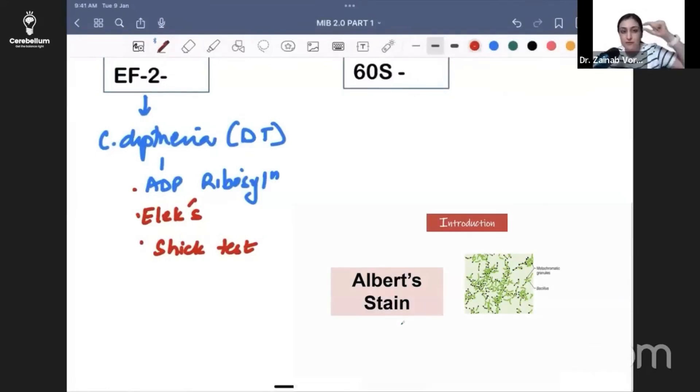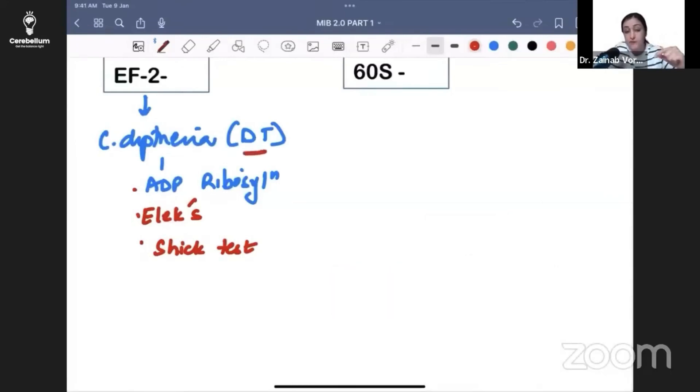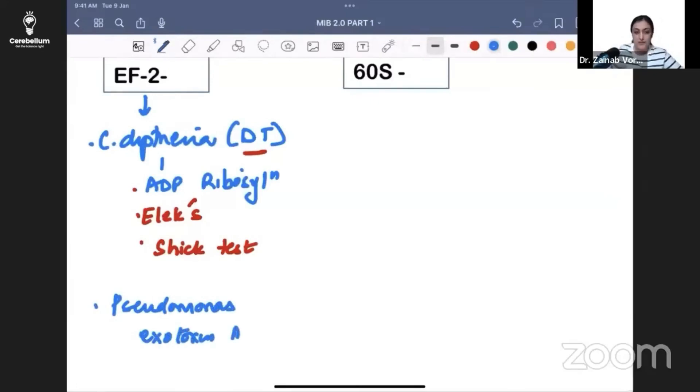We have Albert stain, where the volutin granules containing diphtheria toxin are stained differently - hence the name metachromatic granules. The other bacteria with the same mechanism is Pseudomonas exotoxin A. That's the other toxin with the same mechanism.